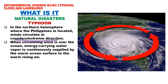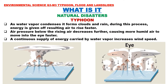When circulating winds are over the ocean, energy carrying water vapor is continuously supplied by the warm ocean surface to the warm rising air. As the water vapor condenses, it forms clouds and rain. During this process, energy is given off, causing air to rise faster. Air pressure below the rising air decreases further, causing more humid air to move into the eye faster.